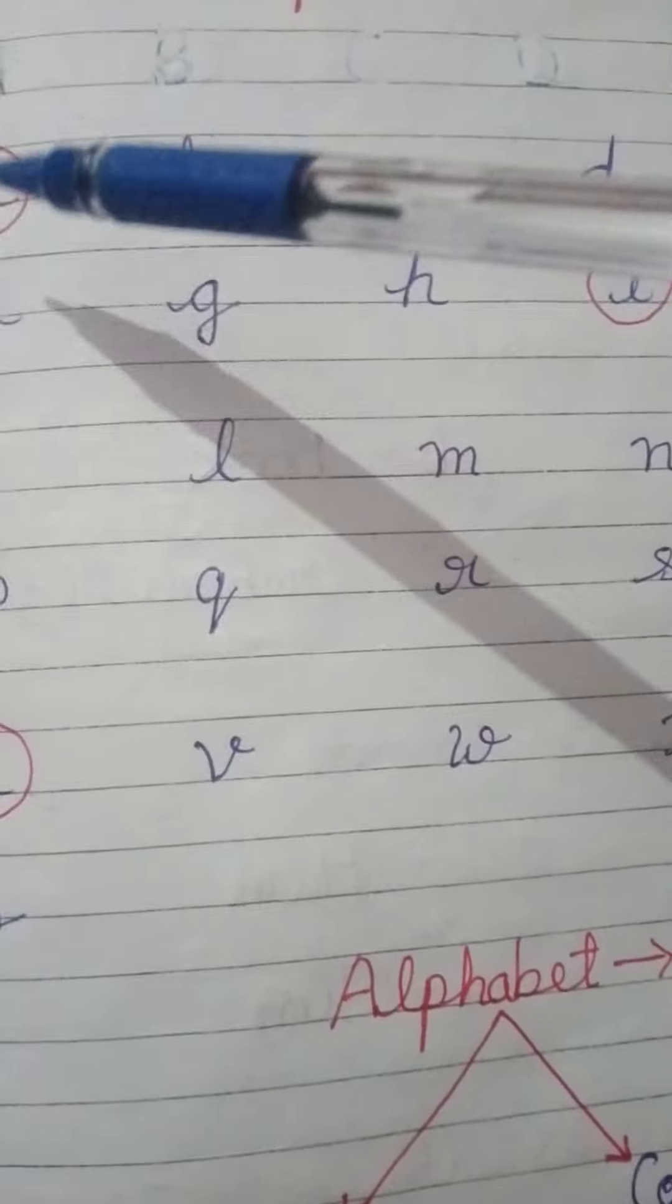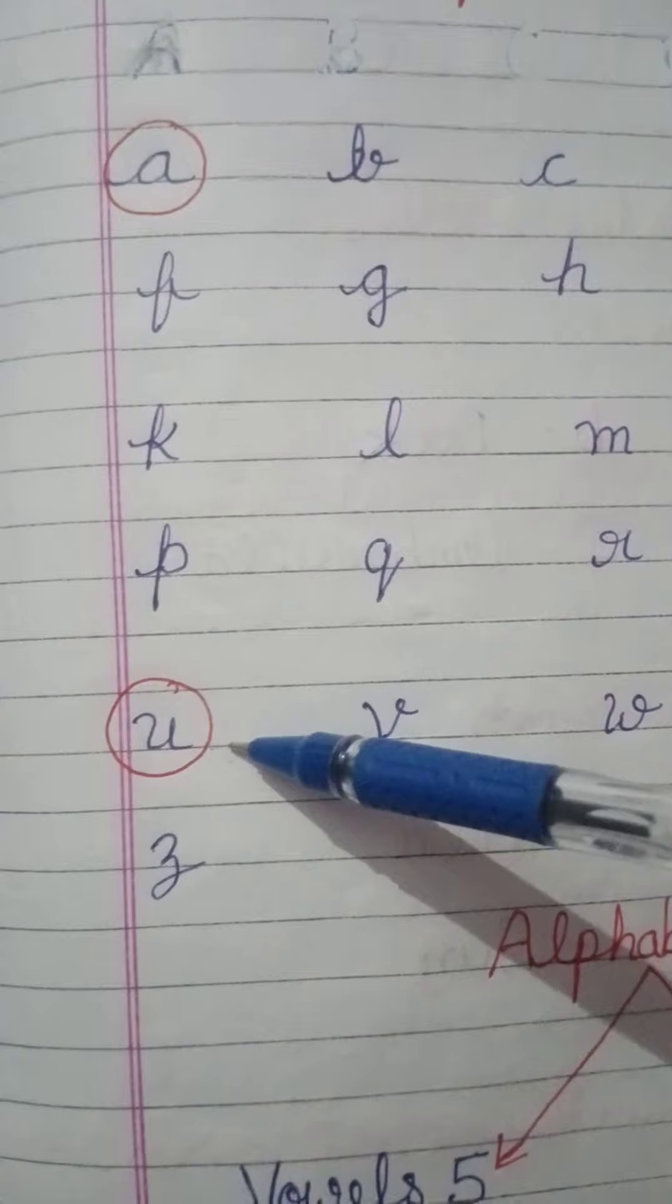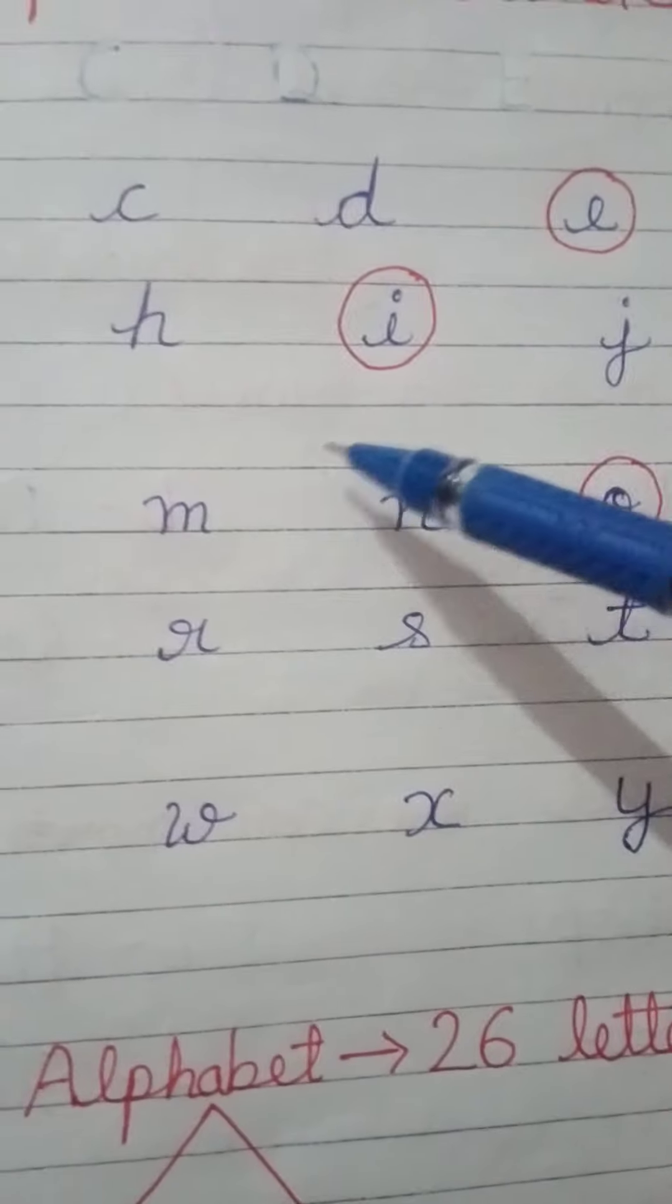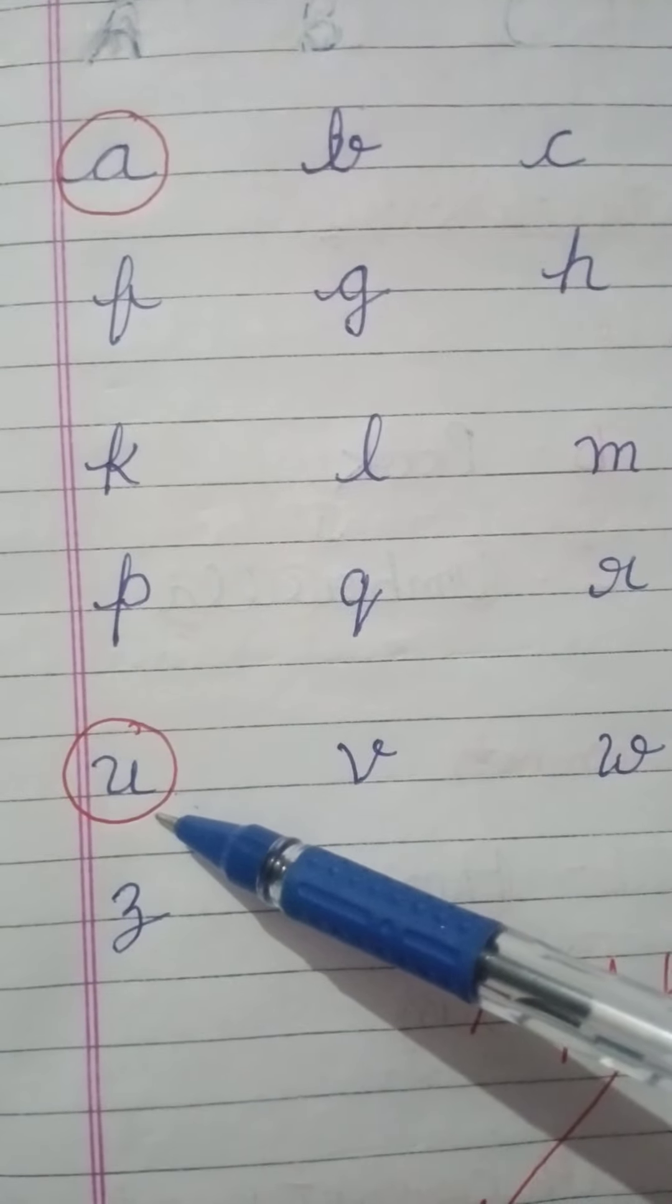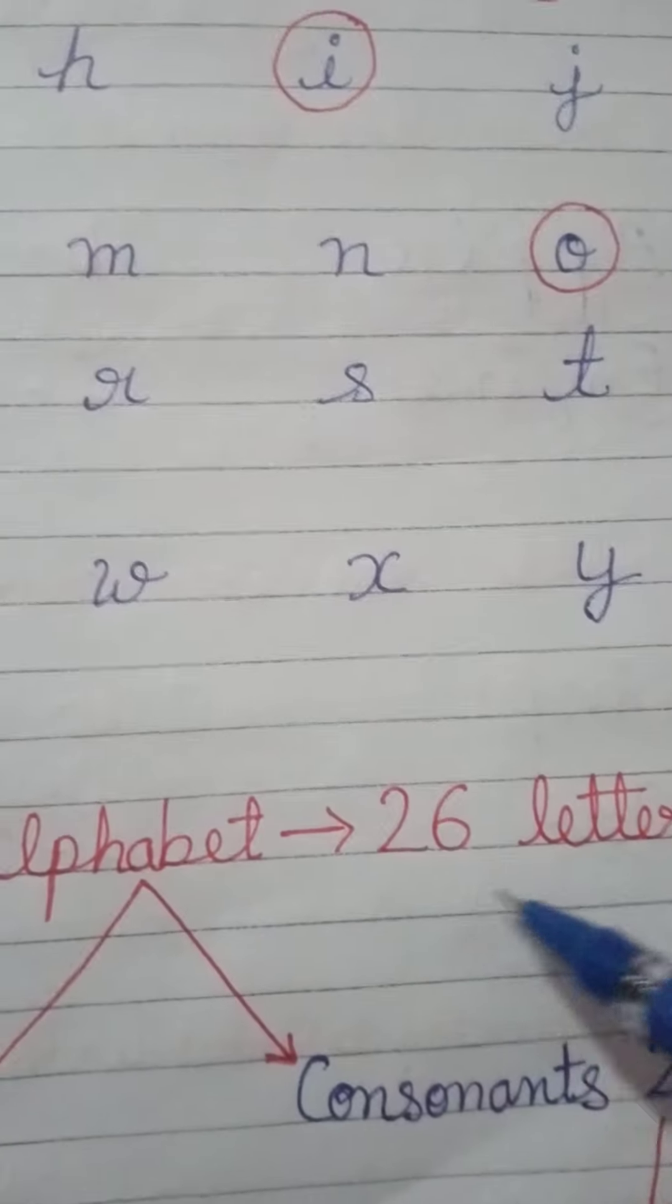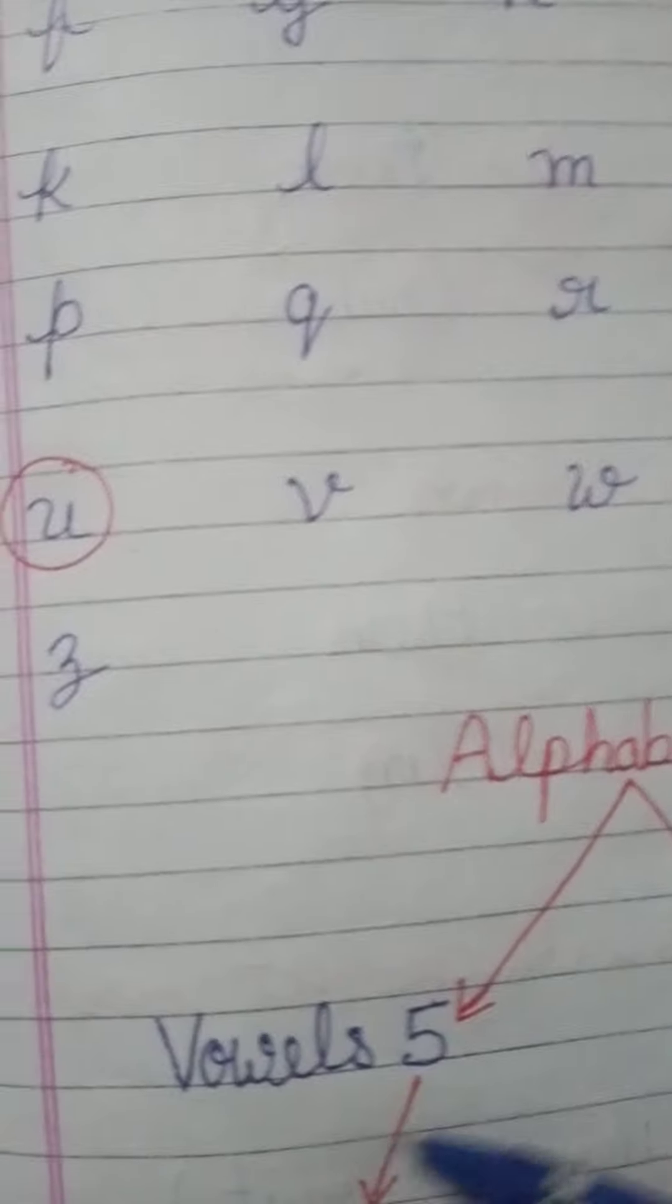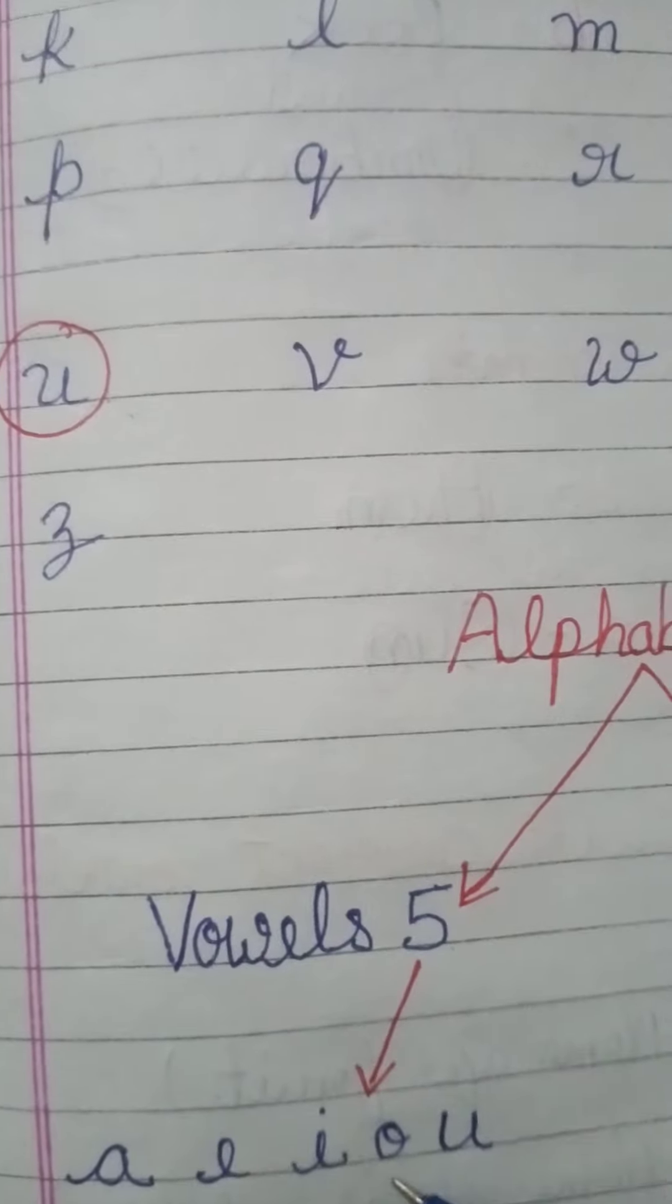And vowels, what are they? A, E, I, O and U. These are five vowels in English alphabet. The alphabets are 26 letters, A to Z. And from our 26 alphabets, five are vowels, which are A, E, I, O, U.